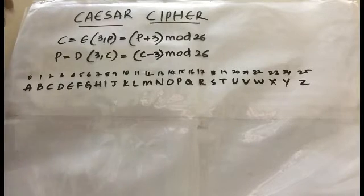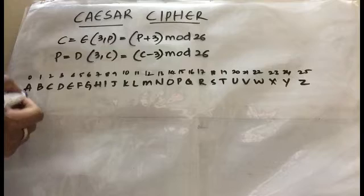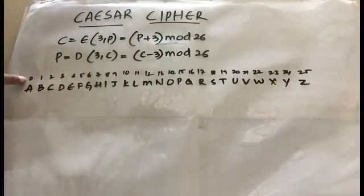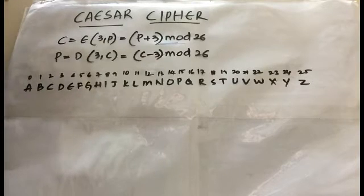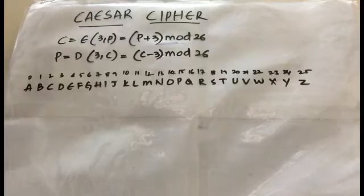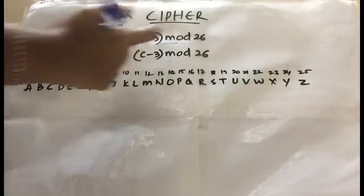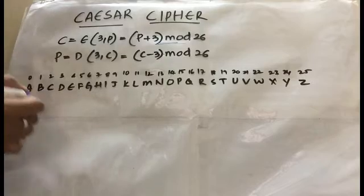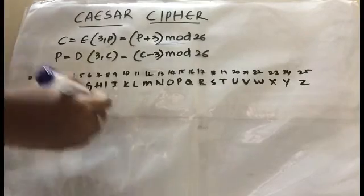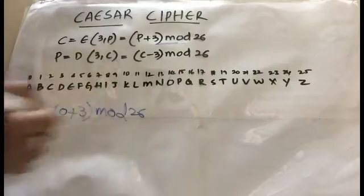For example, let's find the ciphertext for alphabet A. You have to give numberings to the alphabets starting from 0 and ending at 25 — we have 26 alphabets. The corresponding number of A is 0, so we compute 0 plus 3 mod 26.